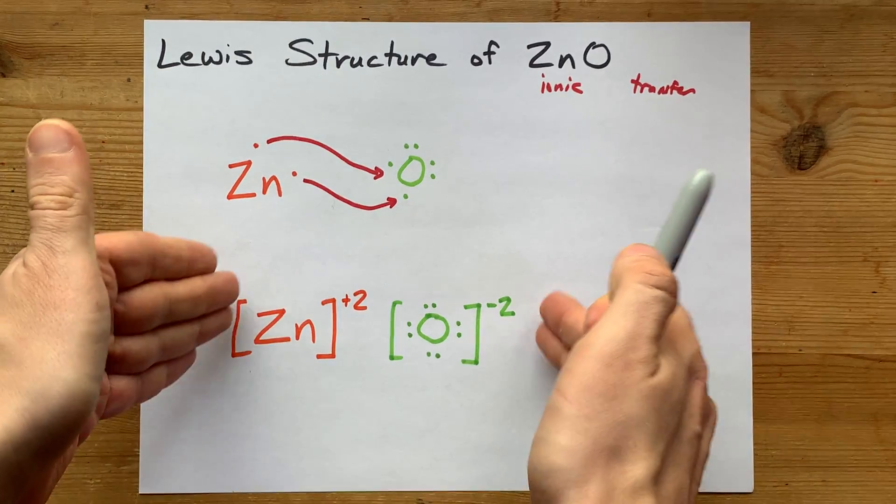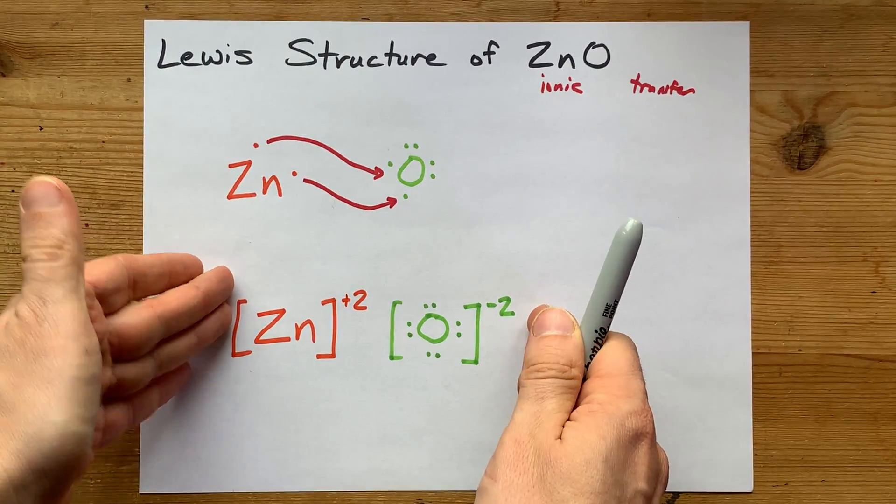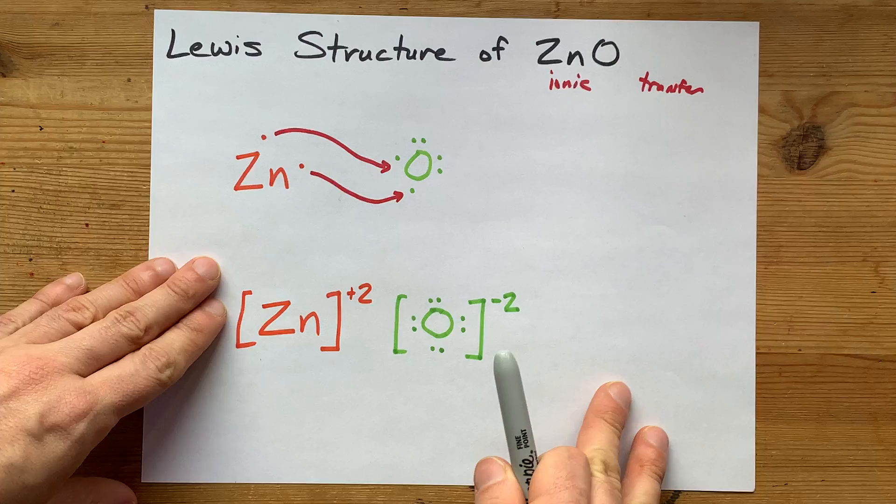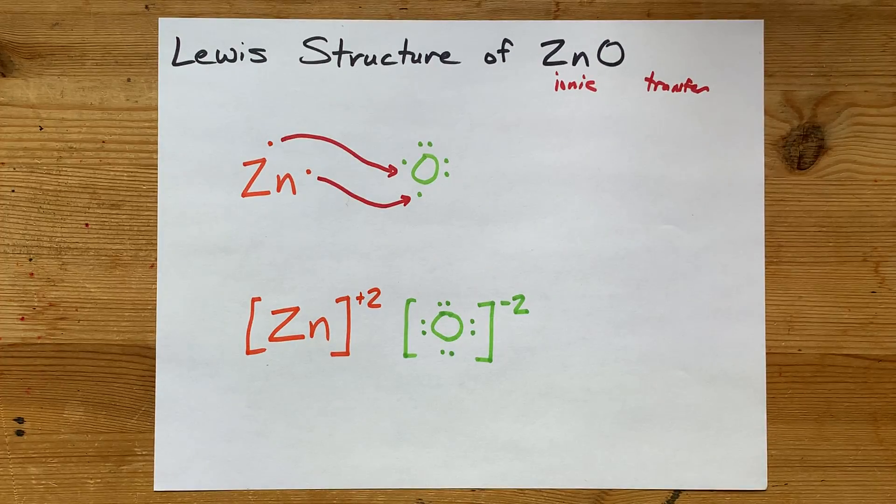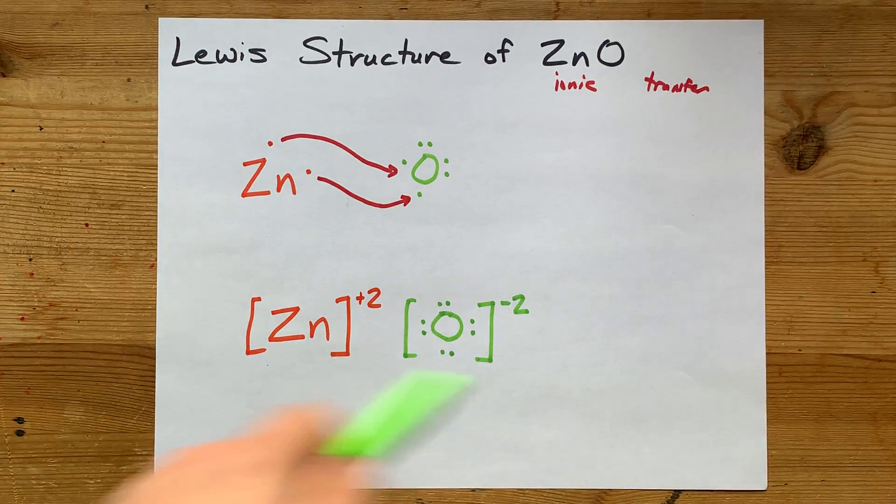This here is the complete Lewis structure for zinc oxide. This is just me showing how it happens, right? This is what you came for. I gave it to you, just like you asked for. Best of luck.